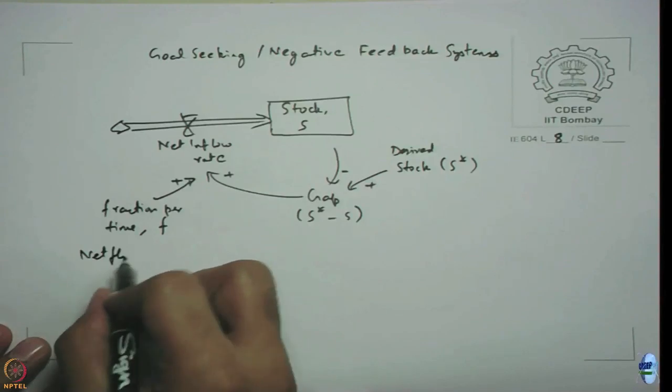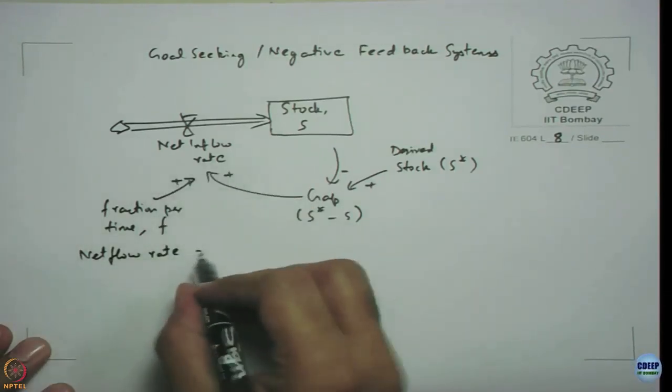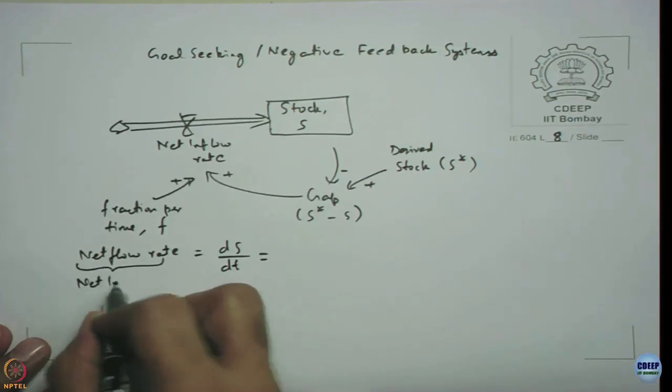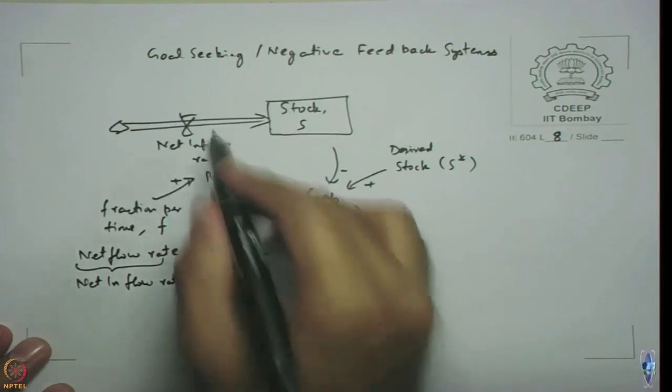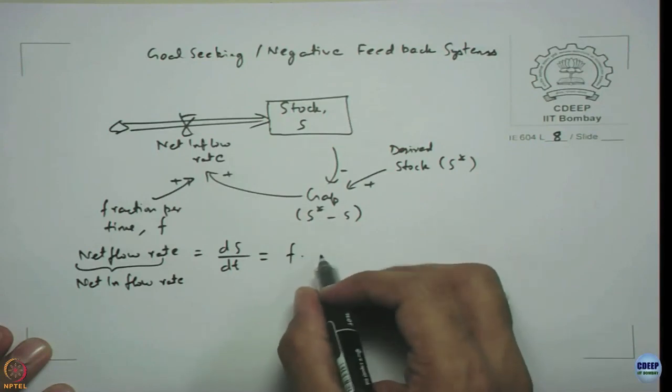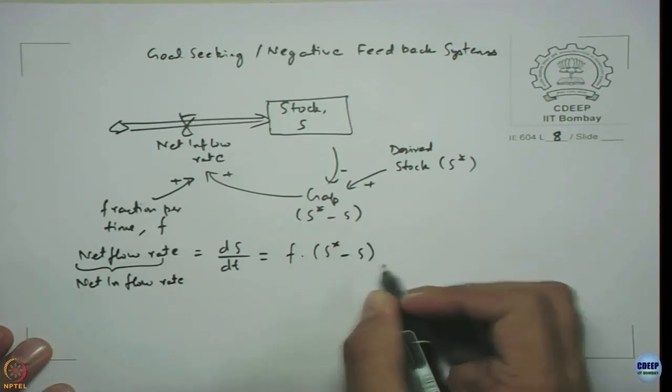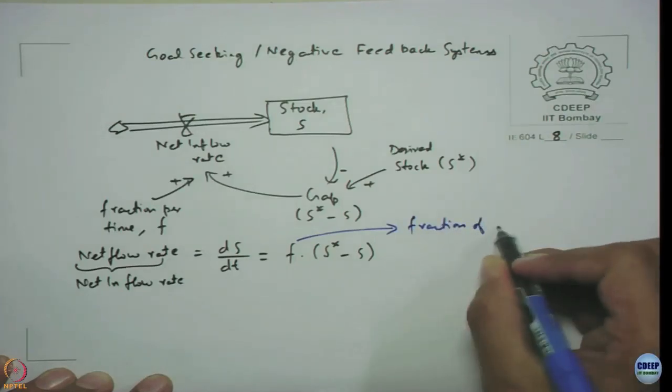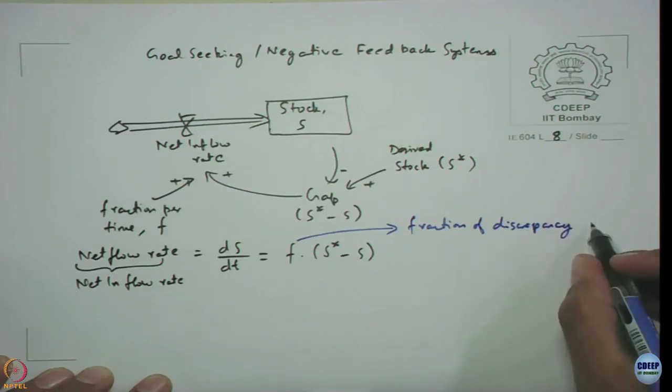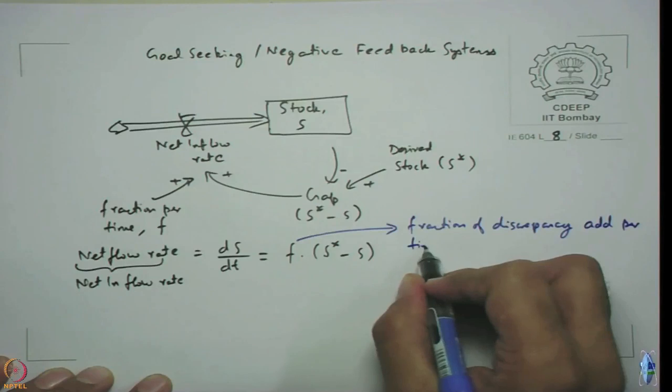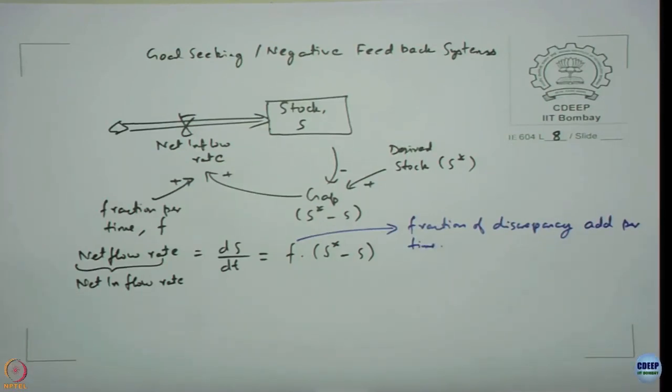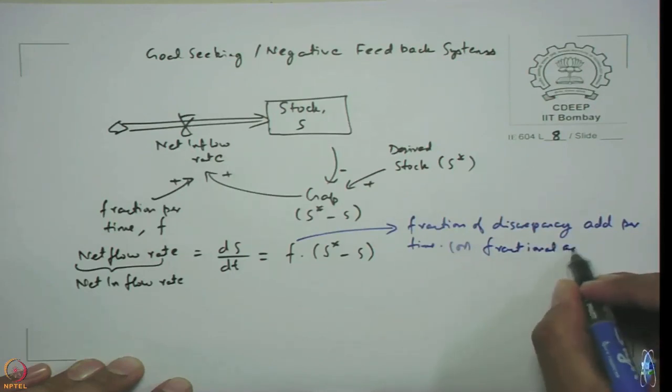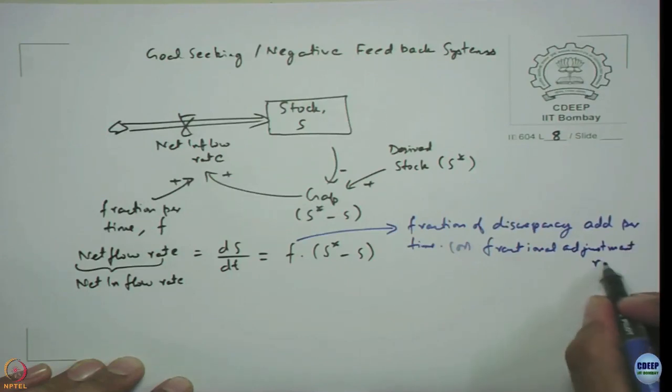We already know that net inflow rate, ds by dt, is given as f into S star minus S. This f represents the fraction of discrepancy added per time. There is a gap and some fraction is what we are fulfilling every time unit, or it is also called as a fractional adjustment rate.